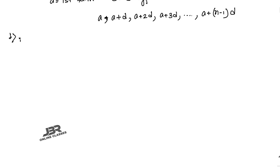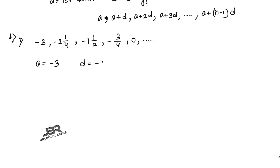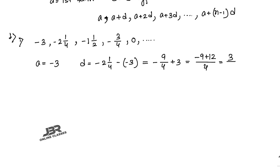Problem 1: Write the 10th term of the sequence: −3, −2¼, −1½, −¾, 0, ... The first term a = −3. The common difference d = second term minus first term = −9/4 + 3 = (−9 + 12)/4 = 3/4. To find the 10th term, apply the general term formula: a_n = a + (n−1)d.